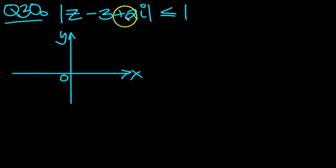Z minus 3 plus 2i, modulus of, is less than or equal to 1. So let's rewrite this then.